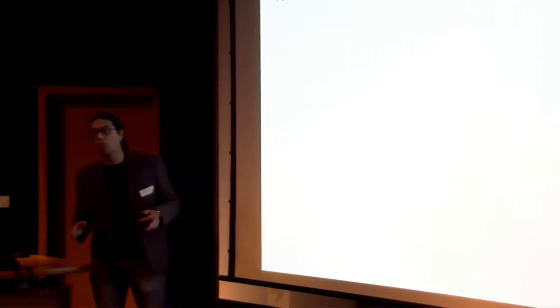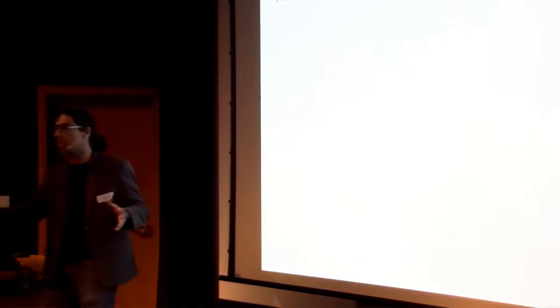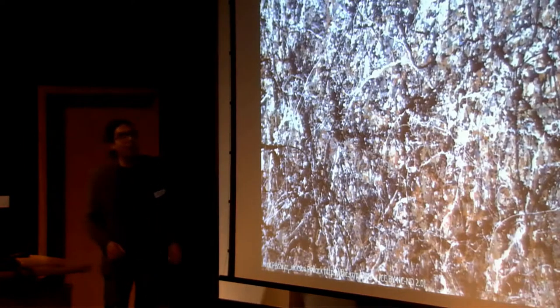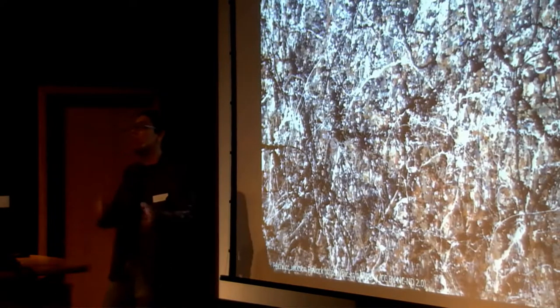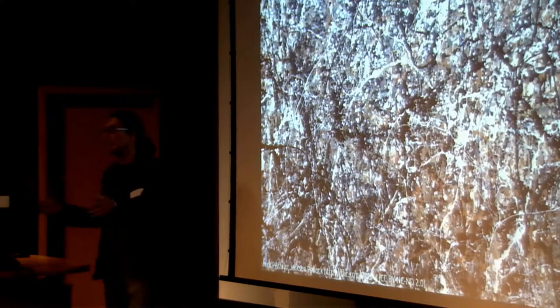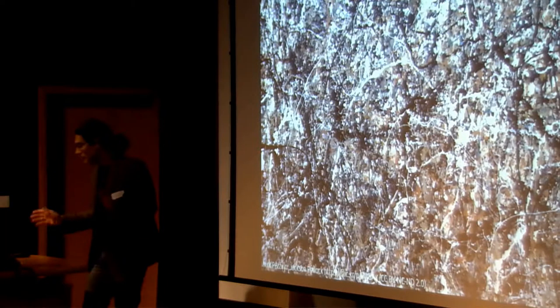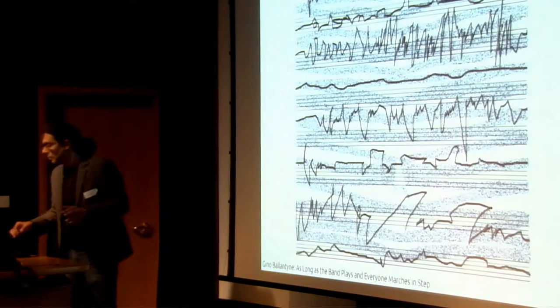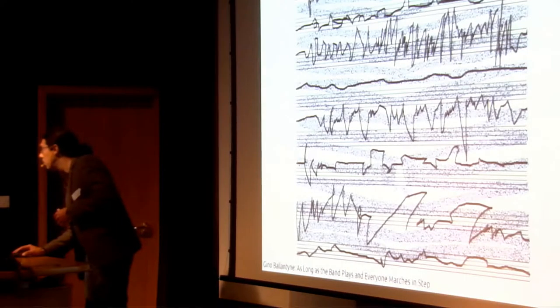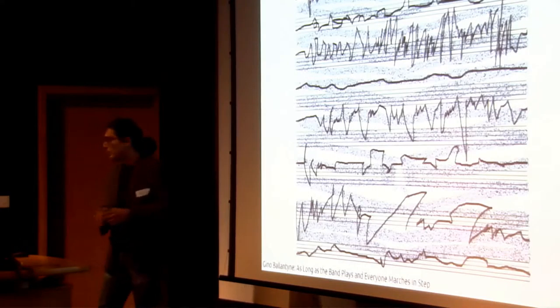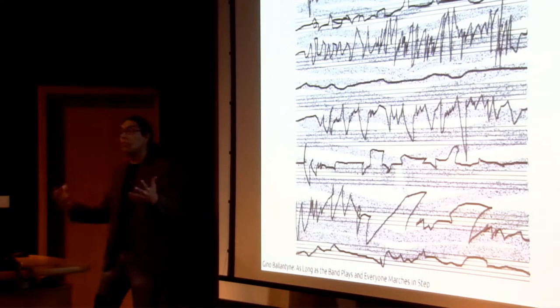In a gallery context, you do not see the process, the method, or the research that happened before the artwork — you only see the artwork. Typically, when you look at a Jackson Pollock painting, if you don't know who it was, when it was, what was happening at that time, it is impenetrable. A more recent example is this artwork by Gino Ballantyne, which is very difficult to understand if you don't know his work.